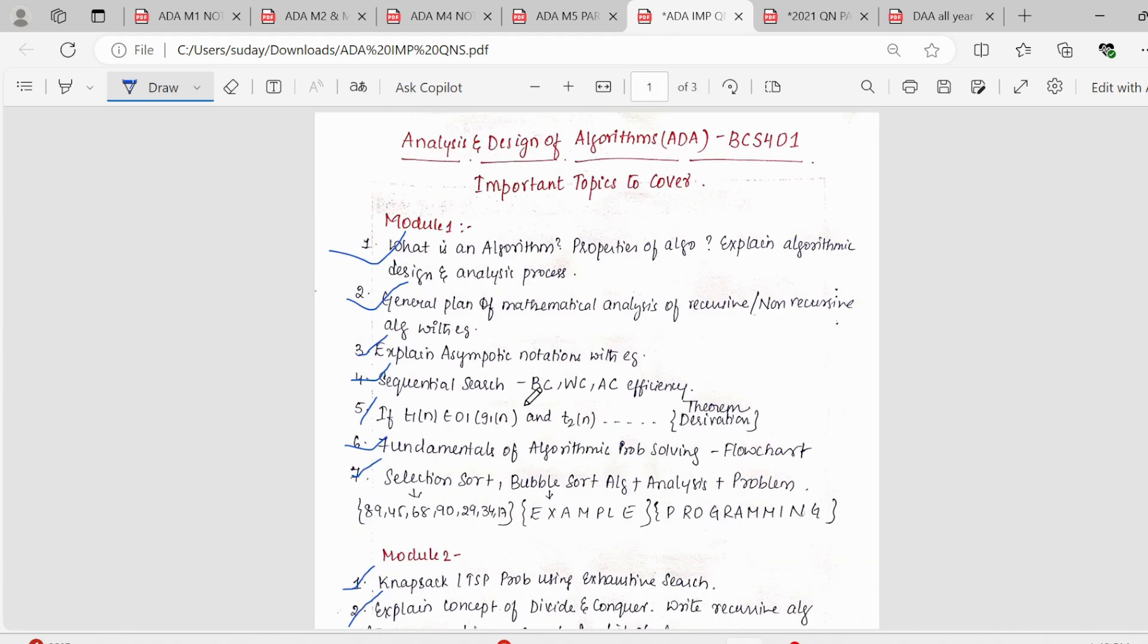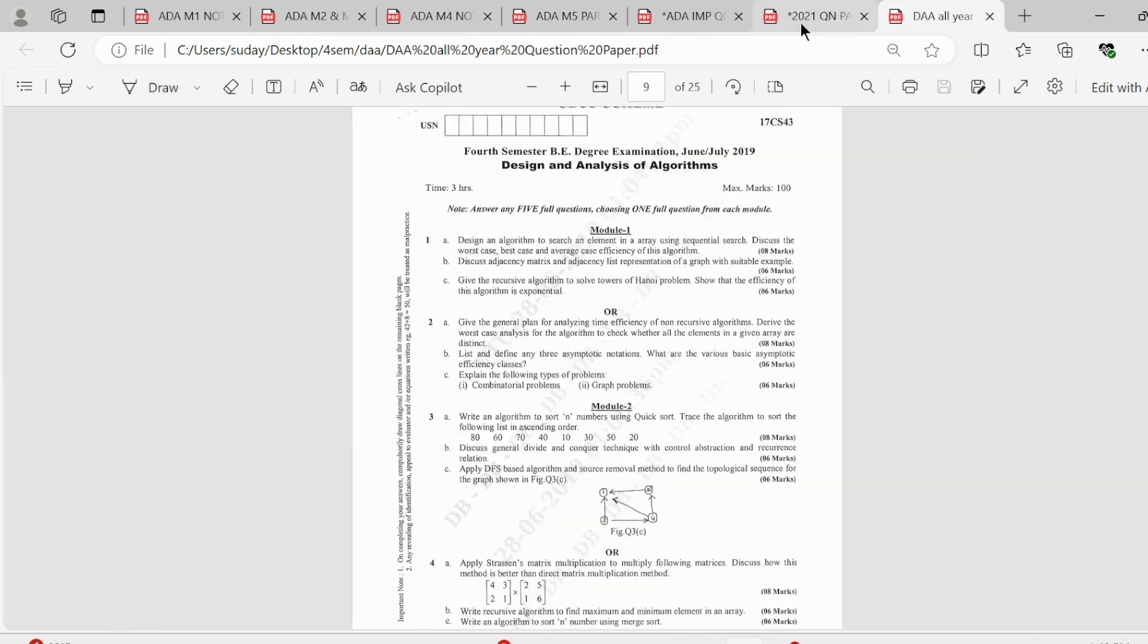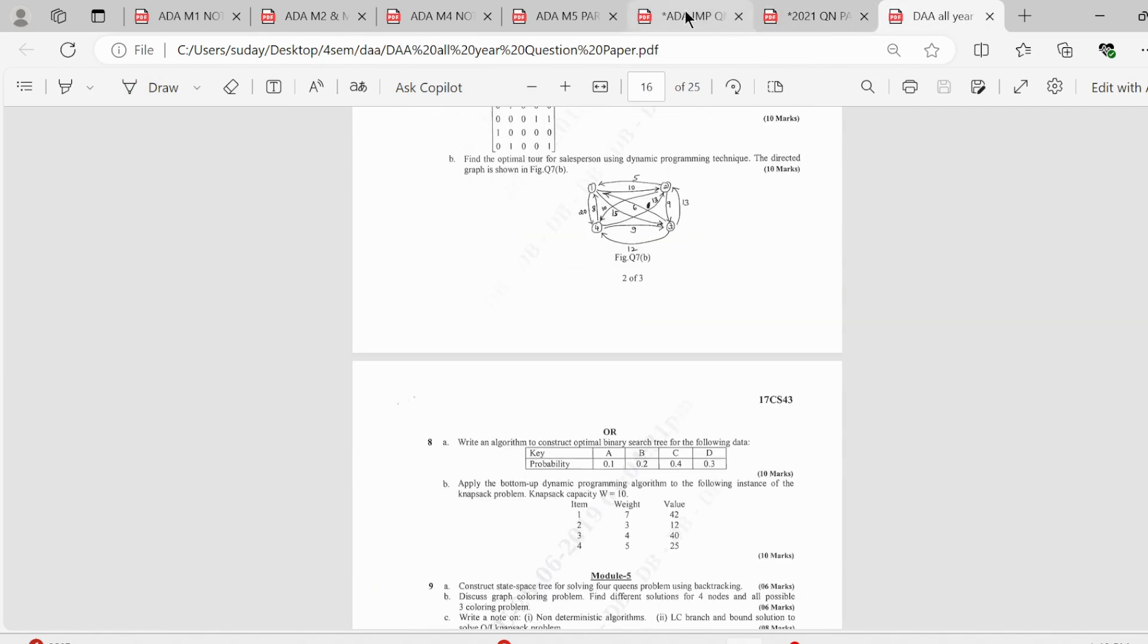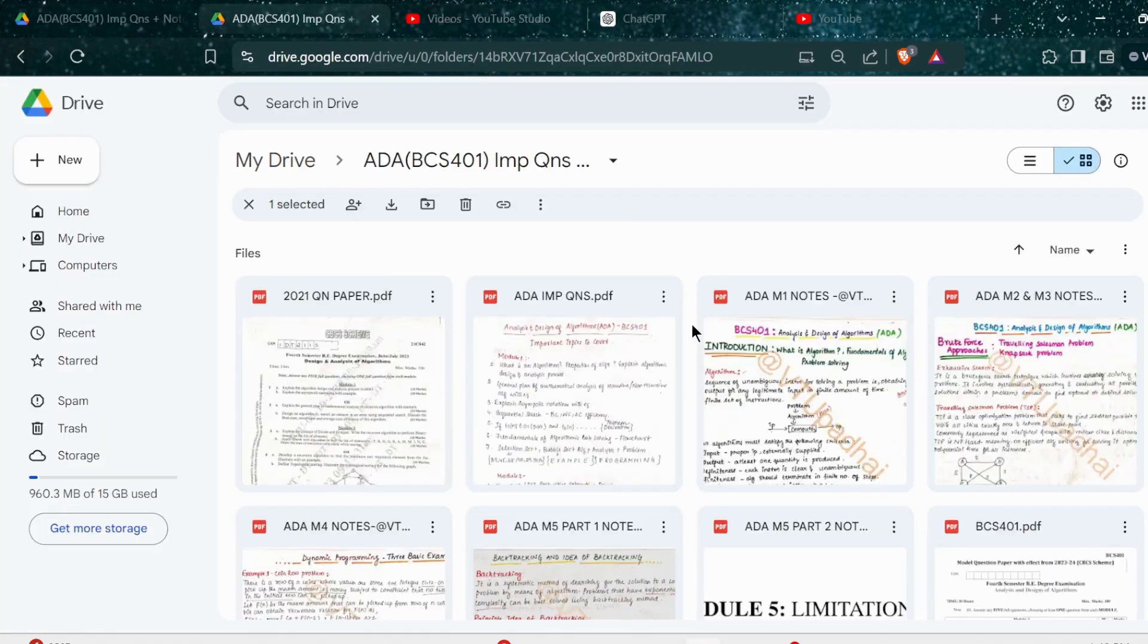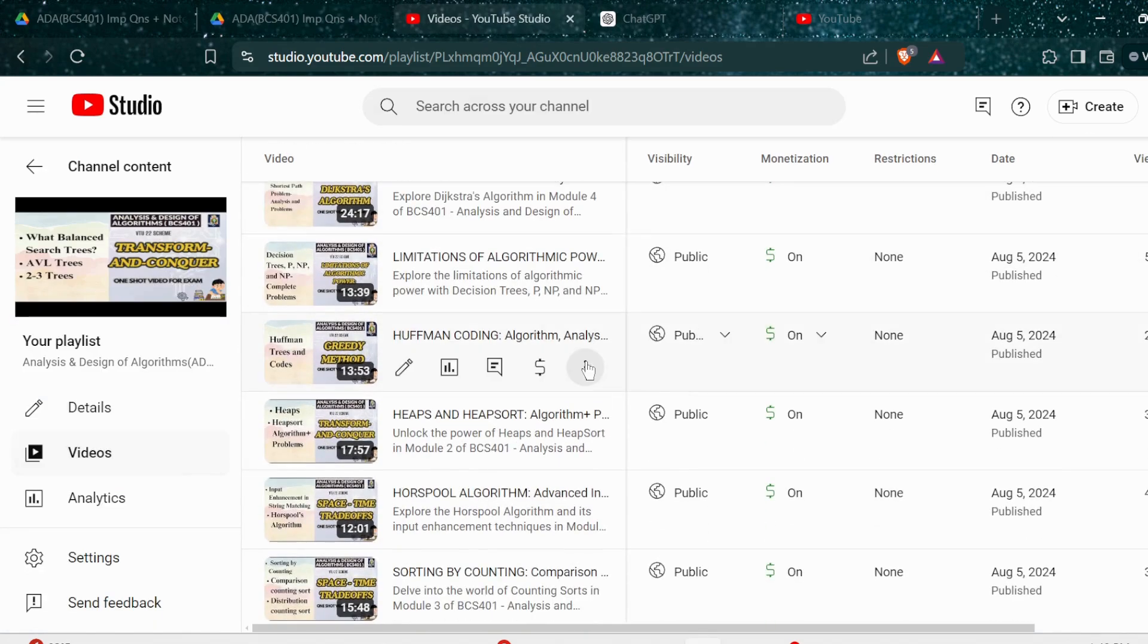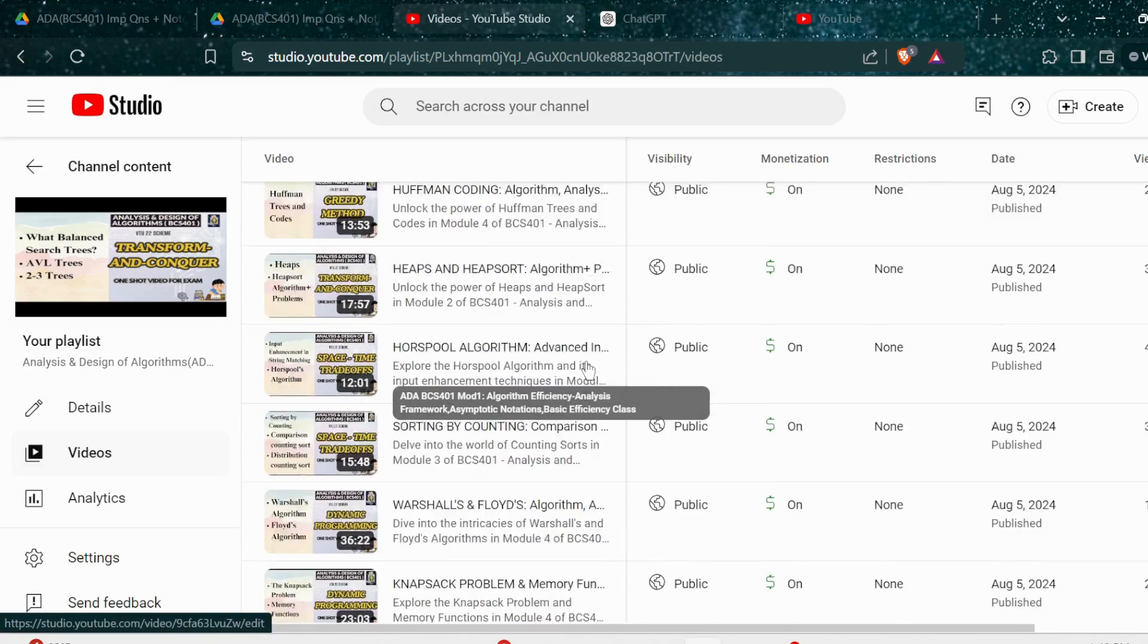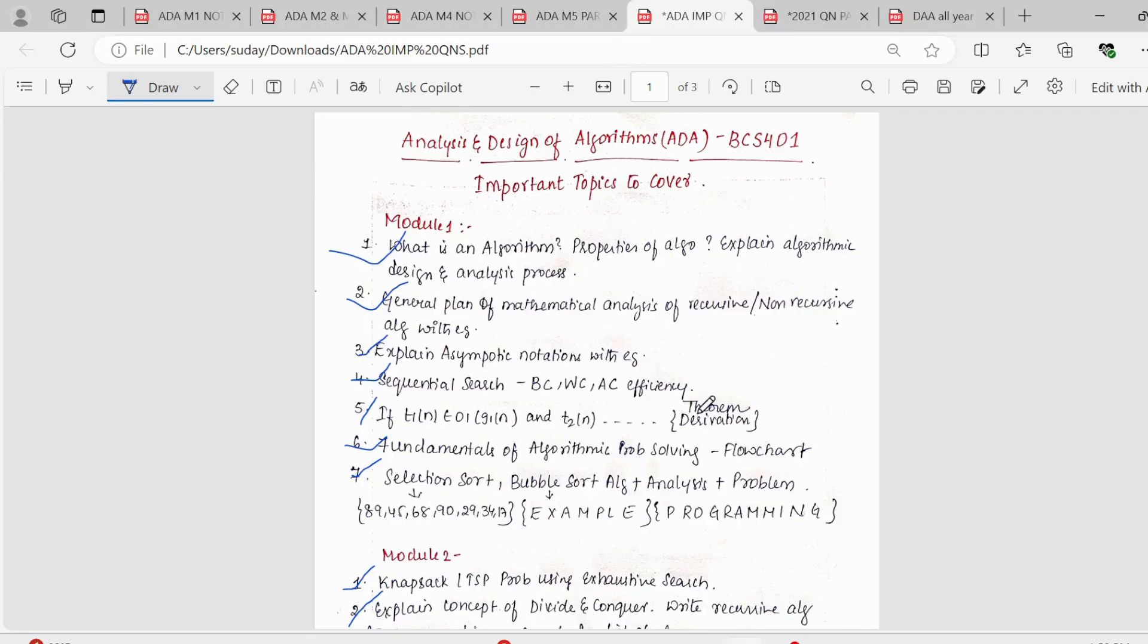So this was about the important questions which I have noted down by comparing the 2021 paper and the previous year papers. So all these notes are important questions. Everything would be available in the description in the Google Drive. So you can go through the Google Drive and access the material. And along with that, each and every topic is covered in my YouTube playlist. So there are 25 videos here. I would say if you cover these 25 videos, you will be thorough for the ADA exam. And if you have any doubt, let me know in the comments and stay tuned. I'll be uploading important questions for other subjects also. And thank you.